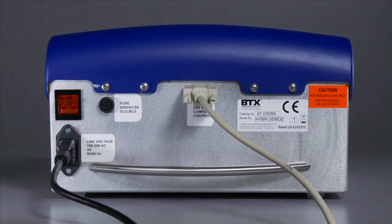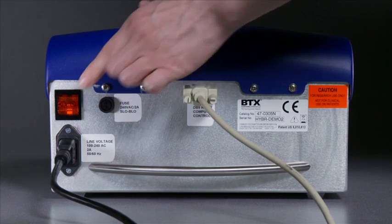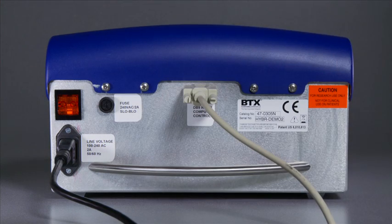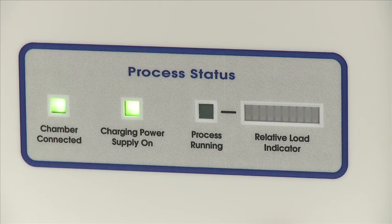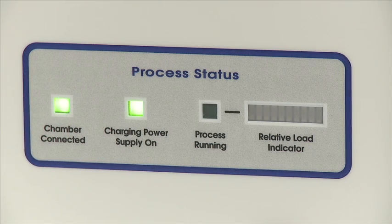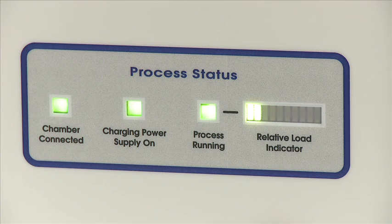Turn on the power rocker switch located on the upper left corner of the back panel. The rocker switch power, chamber connected, and charging power supply on LEDs should illuminate. Run the protocol on the computer. On the HYBRAMUN, the process status should display process running when the protocol is running.